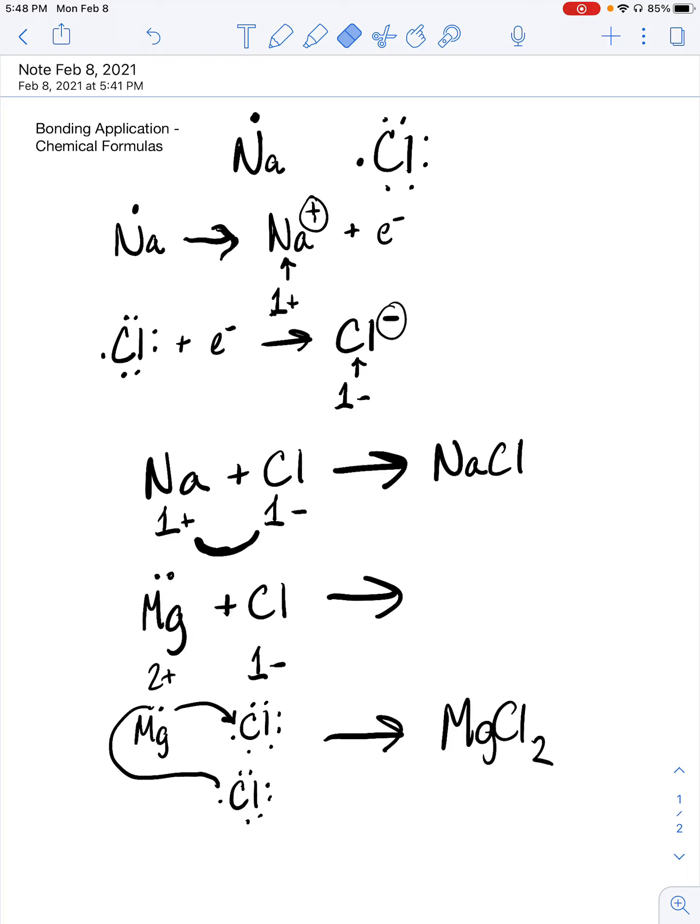This says that I have two chlorine atoms for every one magnesium atom. We never put the number one; that's always assumed. So I only put the two for the chlorine. That's the thought process—you have to get the number of electrons being given to balance out the number of electrons being taken. So magnesium wants to give two, chlorine can only take one, so I have to multiply that to balance it out, and that becomes the subscript in the chemical formula.